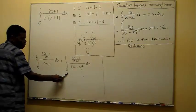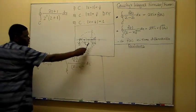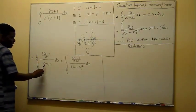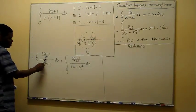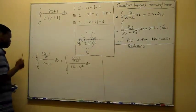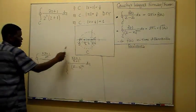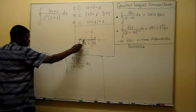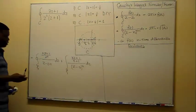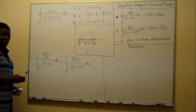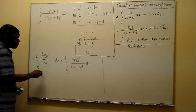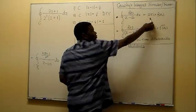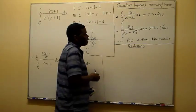We should note that around gamma one this function — (2z + 1) over (z + 1) — has its pole at z = minus 1, so on and around gamma one it is analytic. Similarly, around gamma zero the other function is analytic in and on that curve.